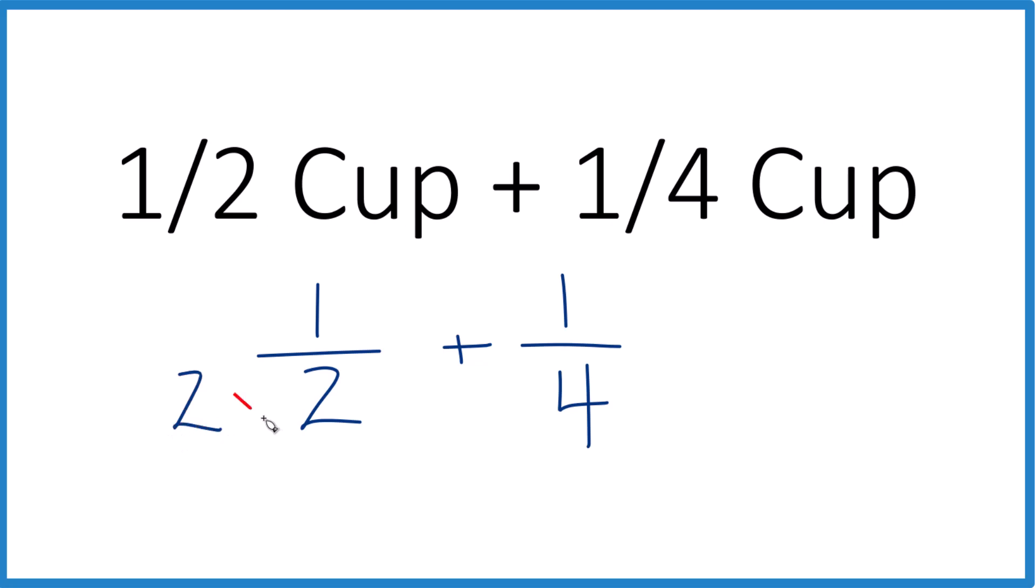We just multiply 2 times 2. That's the same as 4. But we also need to do the same thing to the top. Multiply by 2. Because 2 divided by 2, that's just 1. So we don't really change anything, just the way it looks.